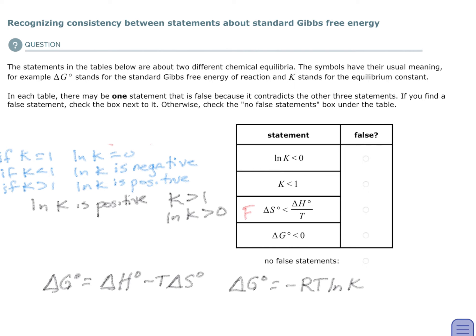Go to the next one. I remind myself what it is, and then realize if all of that is less than zero, then K has to be greater than one, and the natural log of K has to be greater than zero. Well, that means all of those are false.